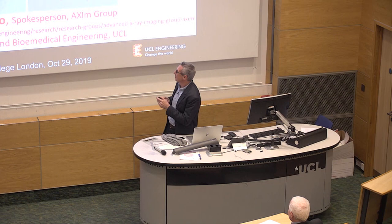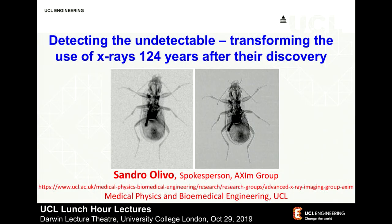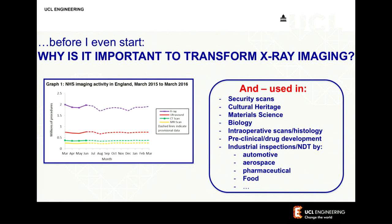So take an image like that — technology is against us — and turn it into an image like that. How can we do that? And before I even start, why should we bother?